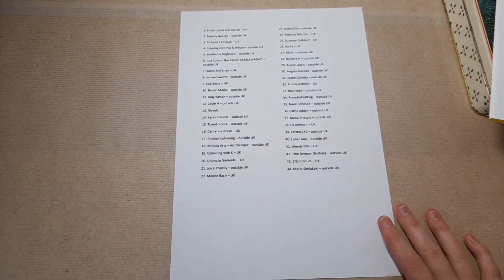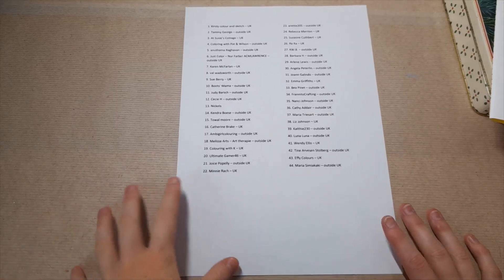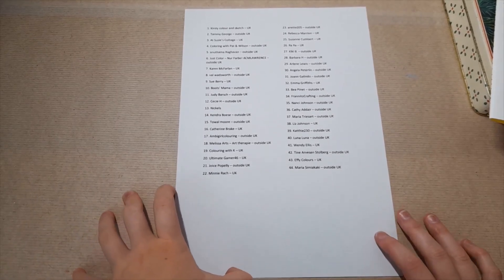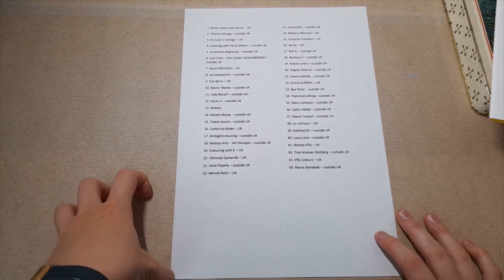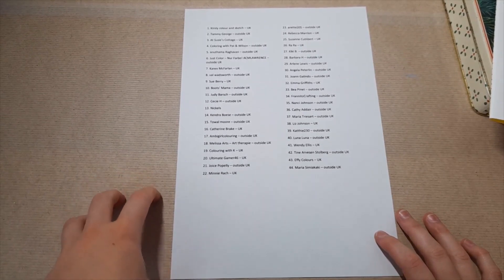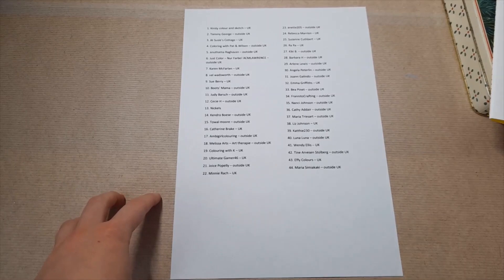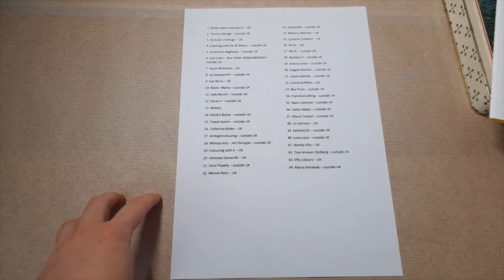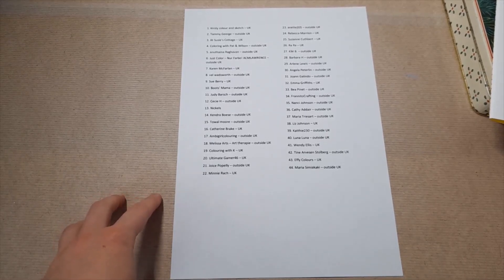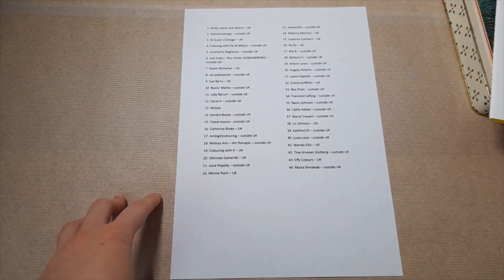So I'm just going to briefly go over again what the prizes were. If the winner was from outside of the UK, it was a £15 book depository voucher. The way that would work is that you would email me your choices up to the value of £15, I would purchase them for you and then send them to you via book depository.